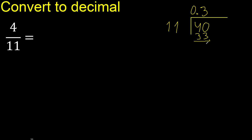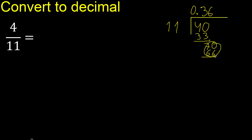40 minus 33 is 7. Next, there is no number, therefore complete always with 0. So write 0 point — bring down to make 70. 11 multiplied by 7 is 77, which is greater. Multiply by 6: 66. Subtract — the result is 4. Complete with 0 again — 40.